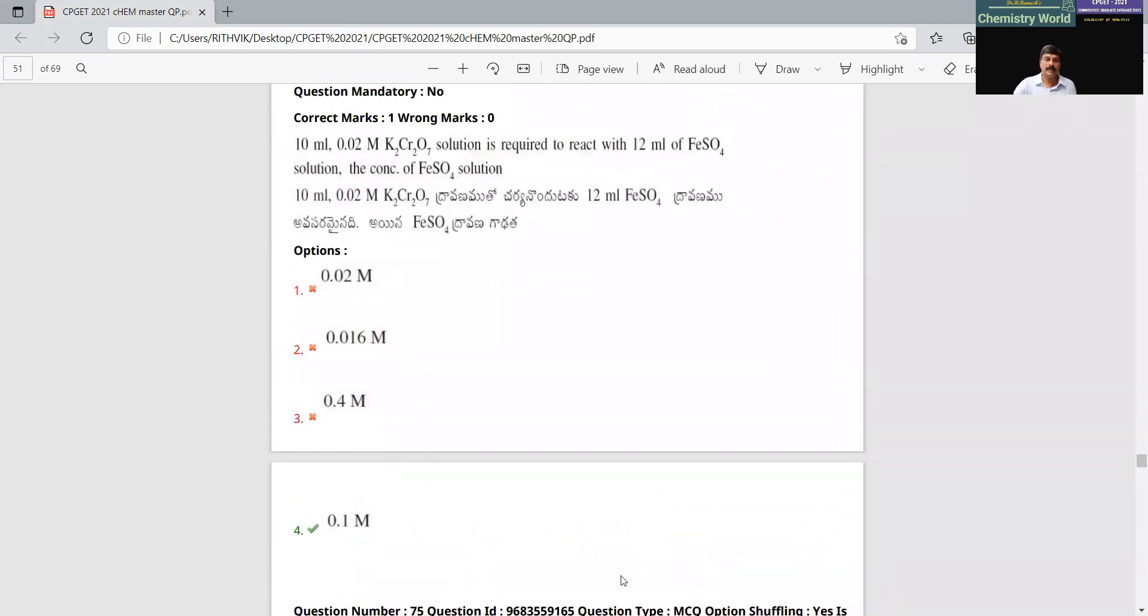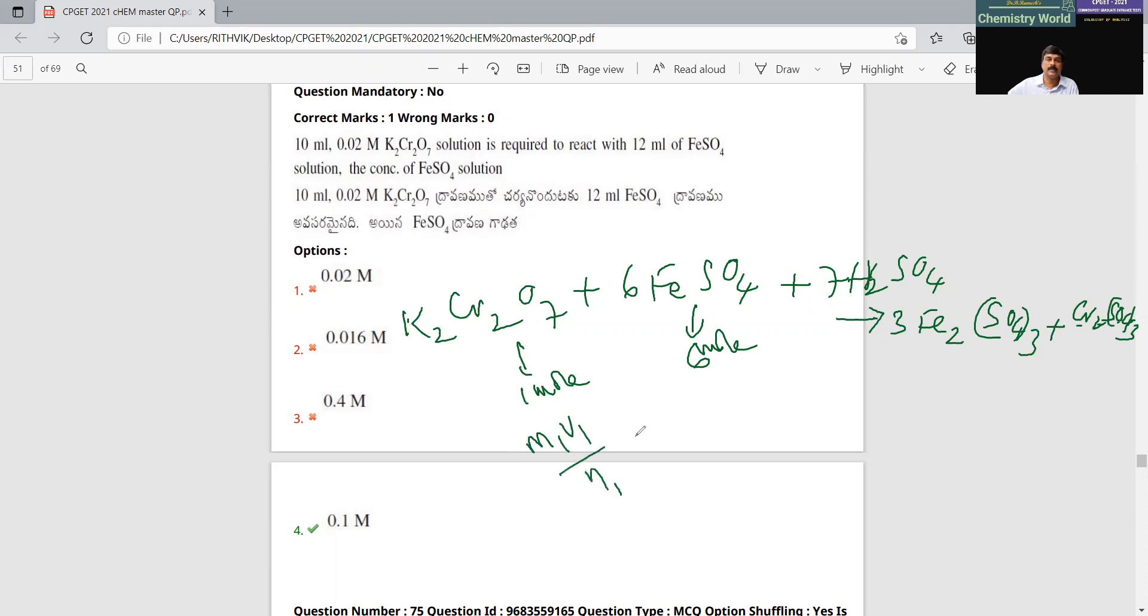Let us write the balanced equation. If you can write the balance of this one, don't worry about this. This comes out to be six moles. This will be equals to one mole, six moles. Apply M1 V1 N1 equals M2 V2 N2 and calculate. M1 is given, V1 is given, N1 is given, M2 is given. I think M2 you need to find out.